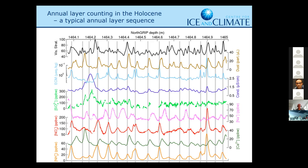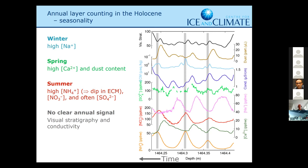Here we see a lot of records — these are continuous flow analysis measurements from NorthGRIP measured by our Bernese colleagues. In the Holocene, it's relatively easy to count annual layers. Let's take a look at this section in more detail. We have different seasonality of the species. We have a winter peak — we can't say it's exactly winter, but we know that sodium is coming in during winter. And in the top of the core, where we also have isotopes in high enough resolution, we can see that the sodium fits the winter dip in isotopes.